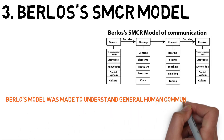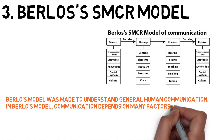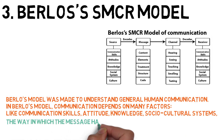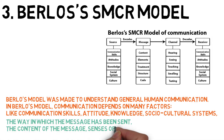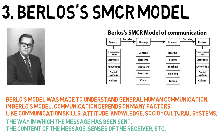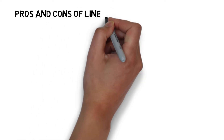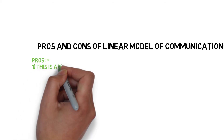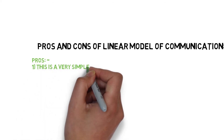Burlowe's SMCR model was made to understand general human communication. In Burlowe's model, communication depends on many factors like communication skills, attitude, knowledge, socio-cultural system, the way in which the message has been sent, the content of the message, and the senses of the receiver.